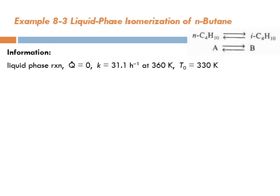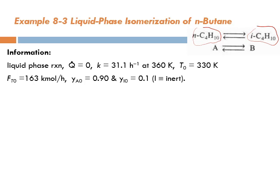So these are the information that we can extract. We have a liquid phase reaction. The heat transfer rate Q dot is zero, k equals 31.1 per hour at 360 Kelvin, and the feed temperature T0 is 330. The reaction is n-butane goes to isobutane reversibly, symbolically written as A goes to B. We have FT0, the total molar flow rate, YA0, YI0, and we can calculate FA0 from the given information.